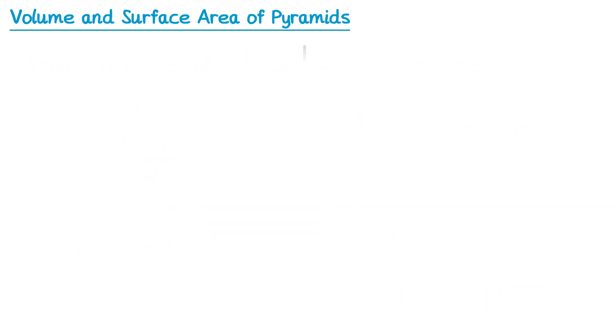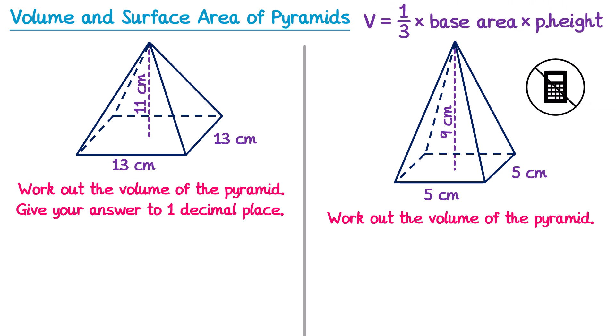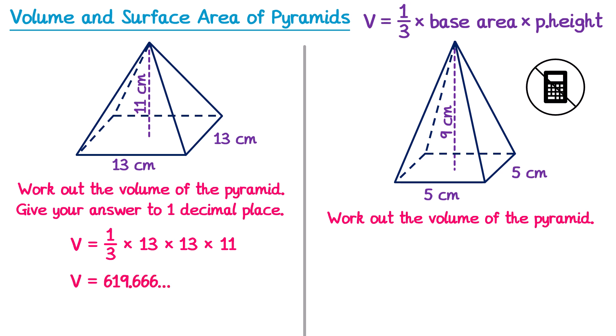Here are two pyramids for you to try and find the volume of. I'll put the formula in the top right for you, and for the second one it's non-calculator. For the answers: for the first pyramid we would do volume equals one-third multiplied by the base area — so 13 times 13 — and then multiplied by the perpendicular height which is 11. Typing this into the calculator and rounding to one decimal place gives 619.7 centimetres cubed.